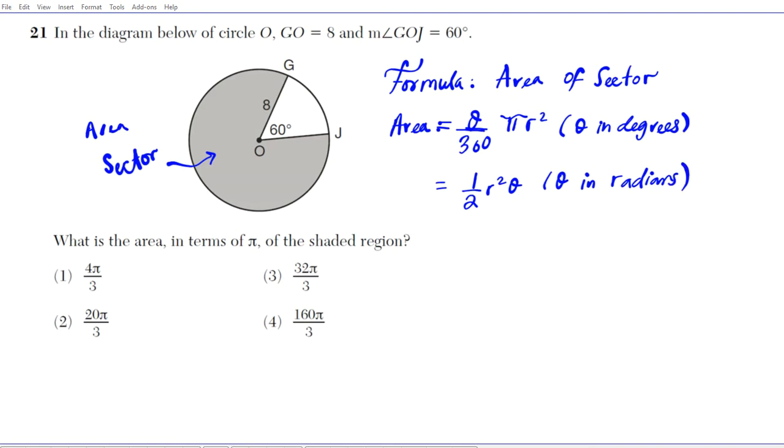Alright, so to solve this problem, we just need two pieces of information. We need what theta is, the central angle, and the radius. So let's go ahead and find theta first. You need to be careful with this problem. We're looking for the area of the shaded region, so we need this angular measure right here. That's what theta is.